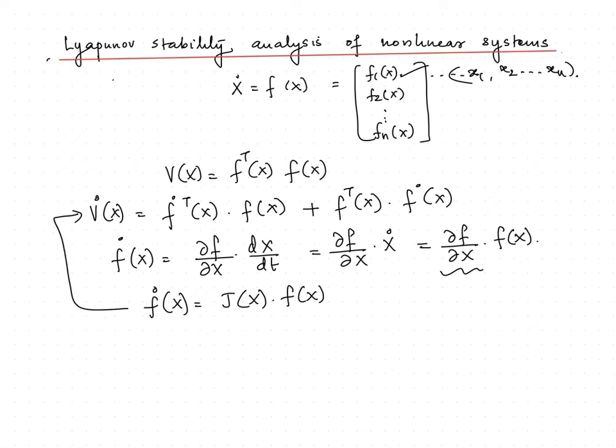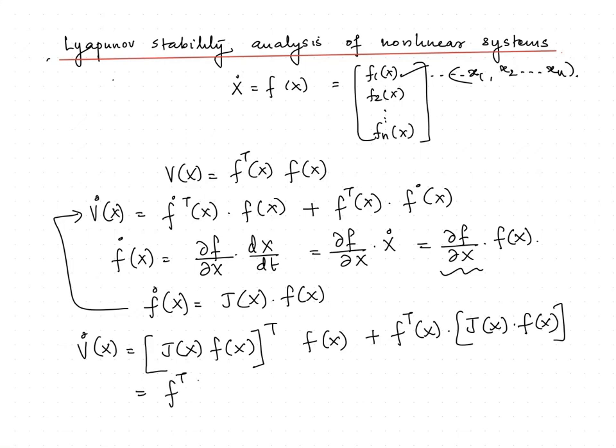We can substitute this in V dot of x. So, V dot equals f transpose of x J transpose of x f(x) plus f transpose of x J(x) f(x).